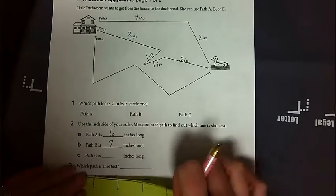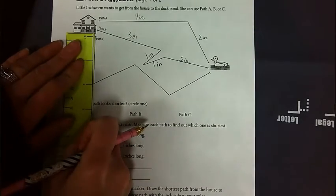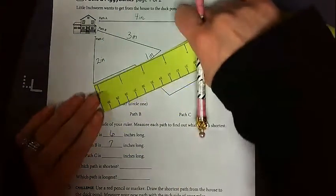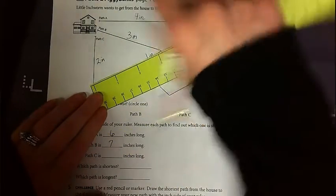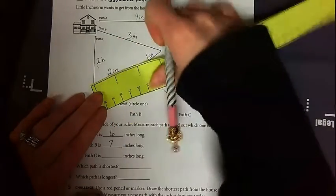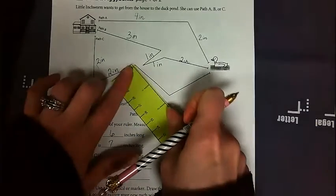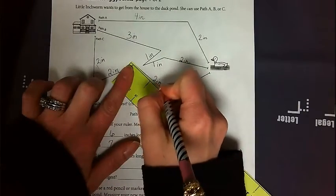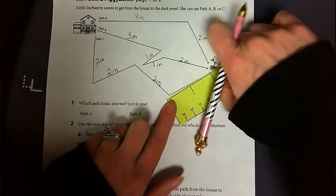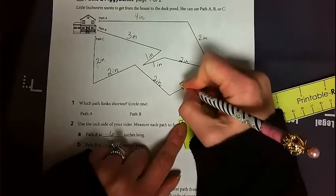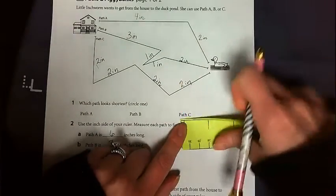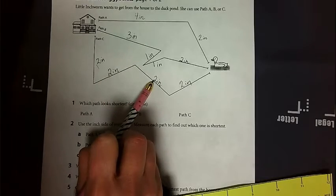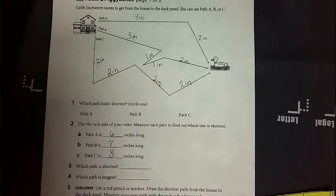And path C. Two inches. I got to turn my ruler. Line up the zero. Two inches. Take my ruler, line up at the bend. Two inches. And another two inches. All right, so now I'm going to add. I'm going to skip count by twos. Two, four, six, eight. Eight inches long.